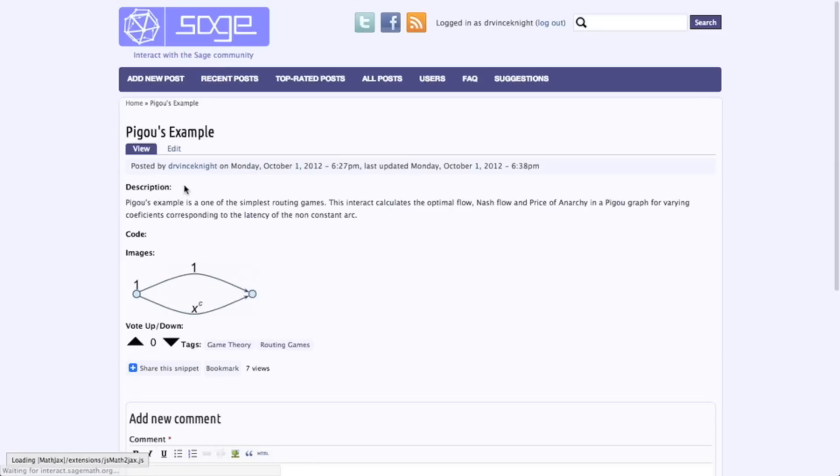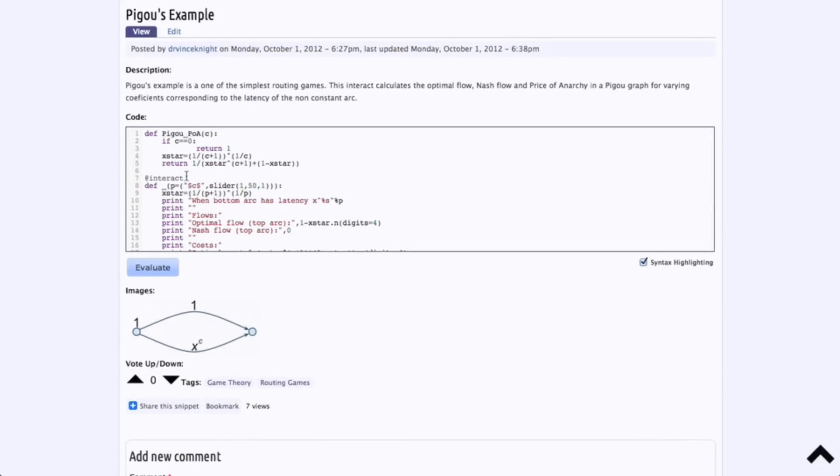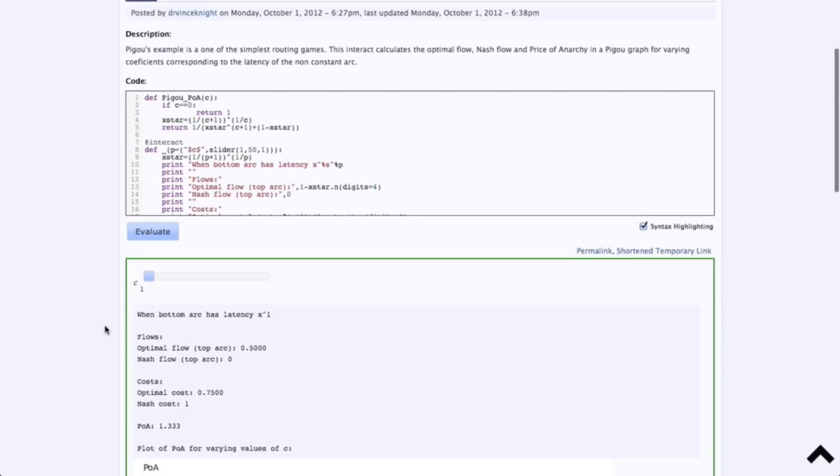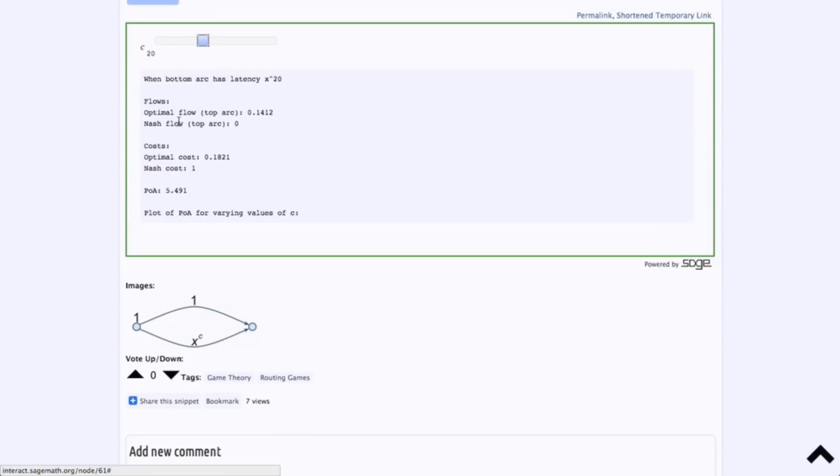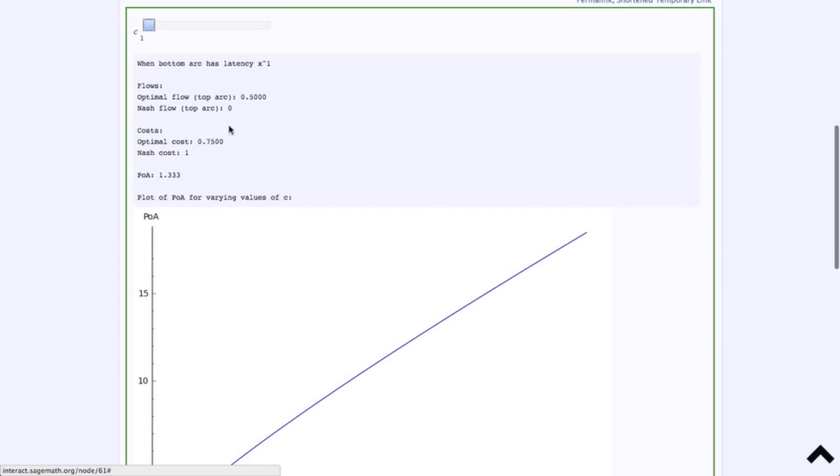So, if I click on that, the code loads up. It's actually quite simple code, but there's no need to look through it. You can just evaluate that. And this creates a little interact, which allows us to play with the value of C and recalculate things. So, if I put that C down to 1, which is exactly the situation we were dealing with. So, the bottom arc has latency X to the 1. The optimal flow is 0.5. The Nash flow is 0. It's exactly what we just saw. And the optimal cost is 0.75. And the Nash cost is 1.